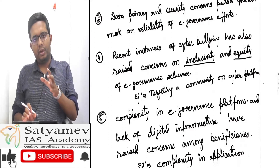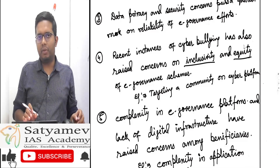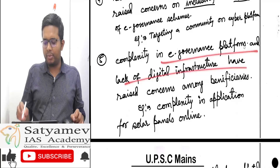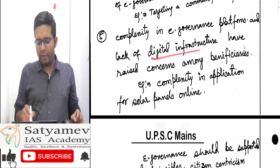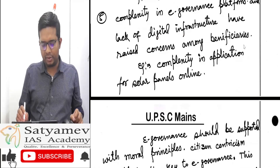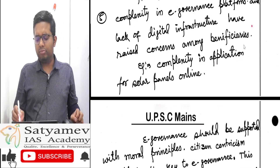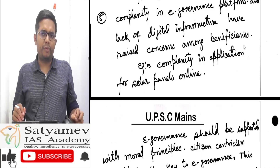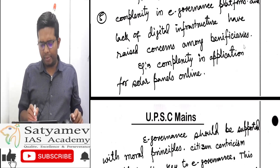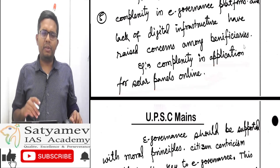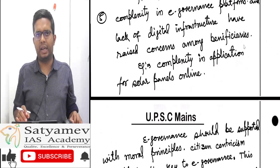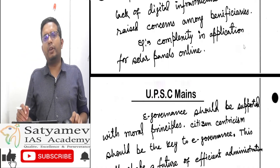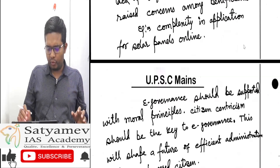Complexity in e-governance platforms is another concern — sometimes the platforms are very complex, and a lack of digital infrastructure raises concerns among beneficiaries. For example, certain forms are very complex to fill, or services are hard to access. A specific example is the complexity in applying for solar panels online, where people who need solar panels are often unable to get them on time.